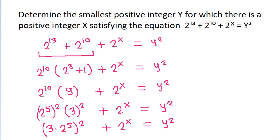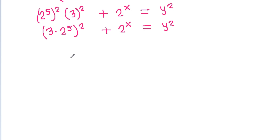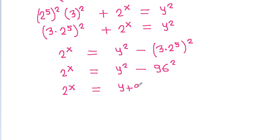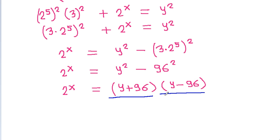So 2^x equals y squared minus (3 times 32)^2, which means 2^x equals y squared minus 96 squared. Applying the difference of squares, 2^x equals (y plus 96) times (y minus 96).